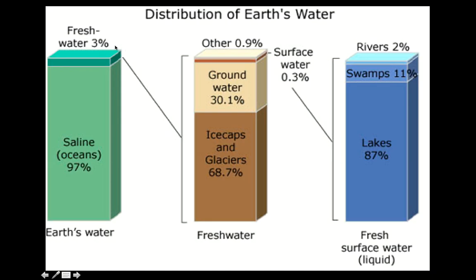Looking at where our water is located, we know that there's three percent fresh water on the planet and 97 percent salt. Of the three percent fresh water — about 2.5% as we discussed in class — approximately 70 percent is locked in ice caps and glaciers, and only about 31 percent is actually usable, as groundwater, surface water, soil moisture, and similar sources.